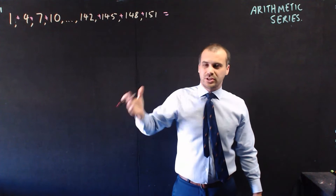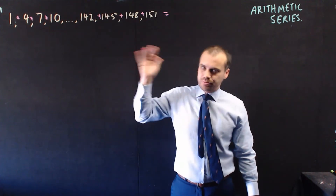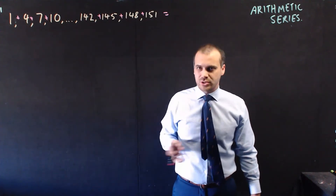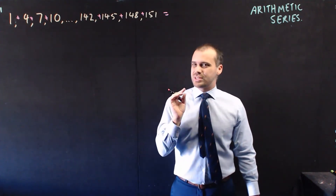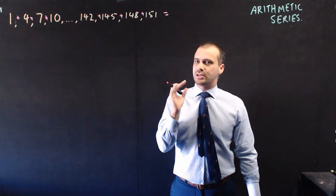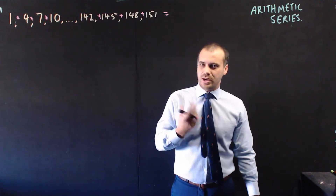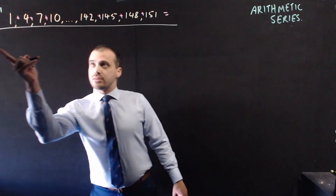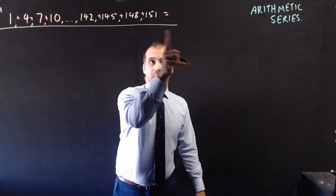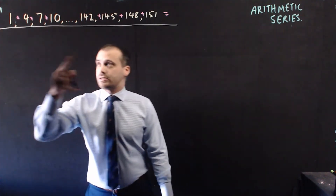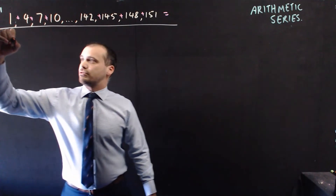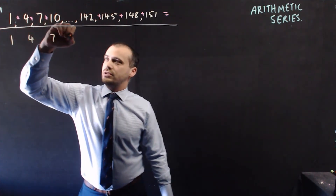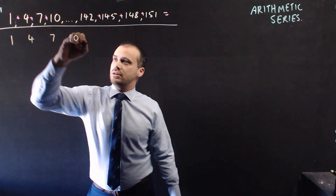How would you do it? You can't just put them all into your calculator — it's going to take way too long. There is a very clever way to do this. What you do is write them in a snake pattern, like this. So you write 1, 4, 7, 10...